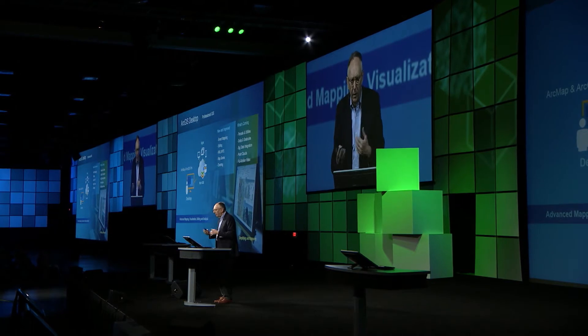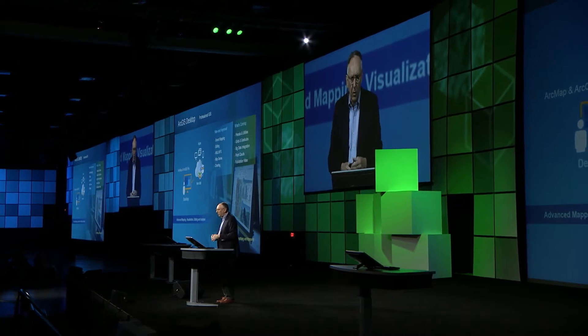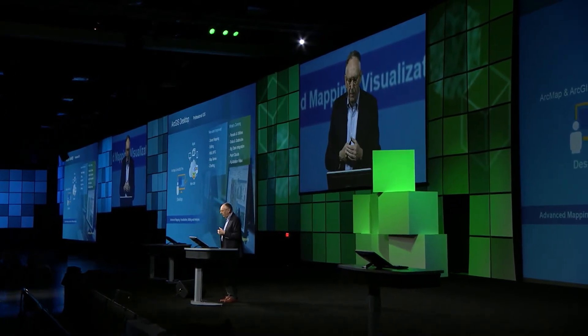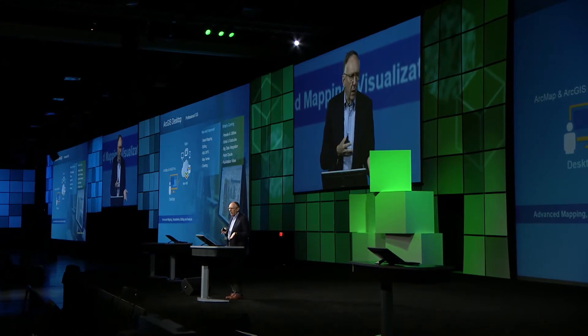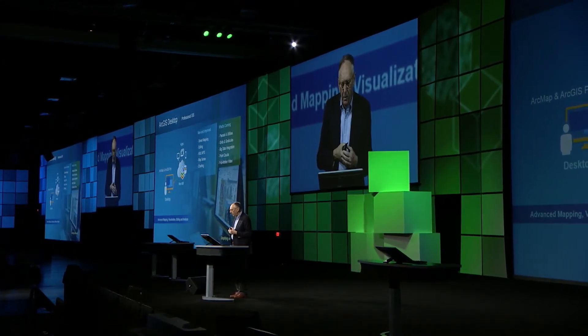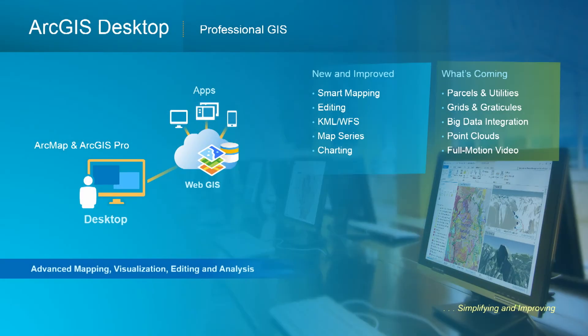These run side by side, but ArcGIS Pro is implemented in 64-bit architecture and implements many ideas that you've asked us to do — things like side by side 2D and 3D, multiple map layouts, etc. Here in the last year we've introduced a lot of new things like smart mapping, better editing, KML support and so on.